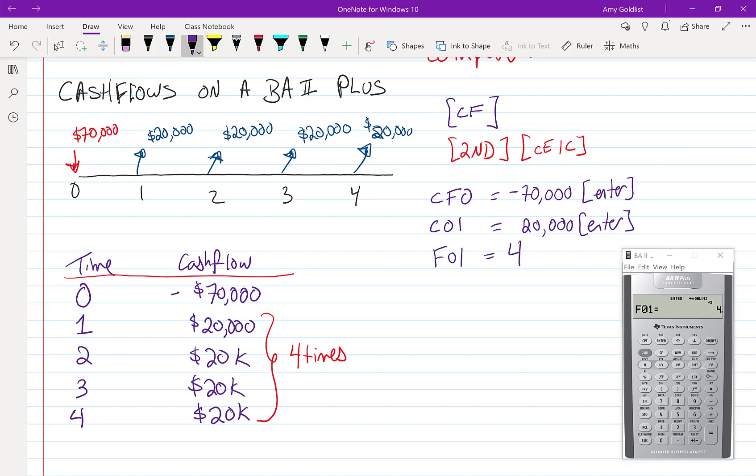So what that says is that at time zero, we paid negative $70,000. At time one, we got $20,000. That happened four times in a row. And that's all that we need for this example. We're going to be looking at more of these.